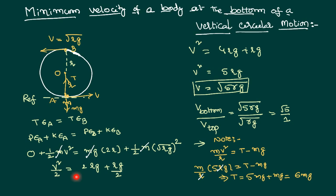We can write the remaining terms: V²/2 = 2Rg + Rg/2. Multiplying the entire equation by 2 gives V² = 4Rg + Rg = 5Rg, therefore V = √(5Rg). This is the minimum required velocity at the bottom of vertical circular motion. If the velocity is more than this, the body can continue circular motion; if it is less, the body cannot continue its vertical circular motion.